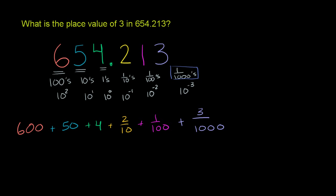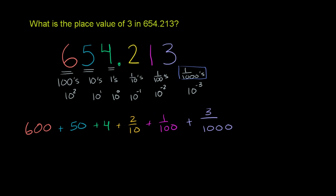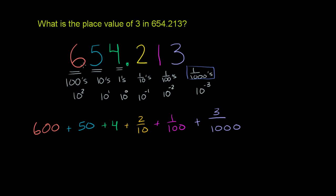Or we could write this, just to really make sure we understand what we're talking about when we mean place value. We can rewrite this number as 6 times 100, plus 5 times 10, plus 4 times 1. I keep doing that in the wrong color. Plus 4 times 1.